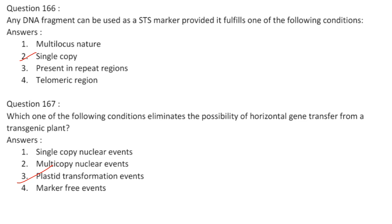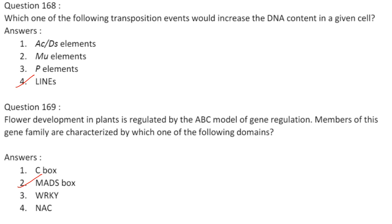Any DNA fragment can be used as an STS marker provided it exists as a single copy — a sequence-tagged site is a short region whose exact sequence is found nowhere else in the genome. Answer is option 2. Plastid transformation events eliminate the possibility of horizontal gene transfer from a transgenic plant. Answer based on plastid transformation.